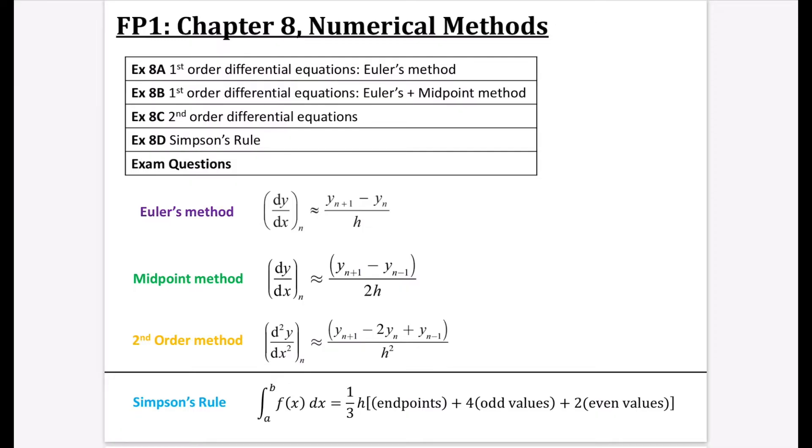Basically what we're going to be looking at in the first three exercises are these three methods for solving differential equations. We've got Euler's method - it looks like it says Euler, but we actually say his name is Euler, and the number E is also called Euler's number as well. We've then got the midpoint method and the second order method, and they pretty much always print these within the questions when you need to use them, so you don't need to memorize these, but I've got them here just as reference for you.